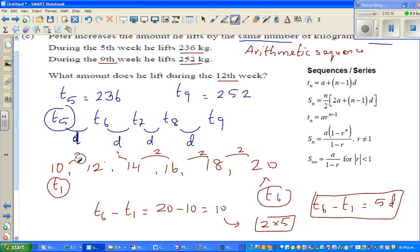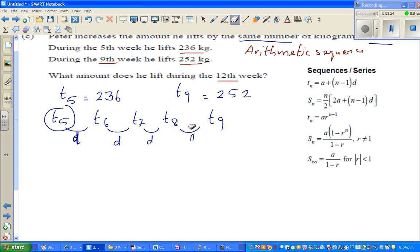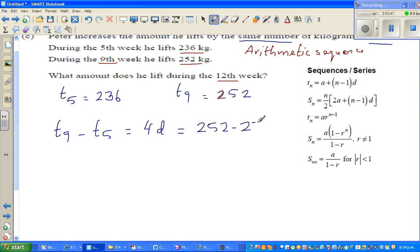Let me delete this. So what am I saying is, I'm saying this: that t5 is 236 and t9 is 252. I can say t9 minus t5 is 4d, or 4 times d, which is 252 minus 236. So 252 minus 236 is 16.